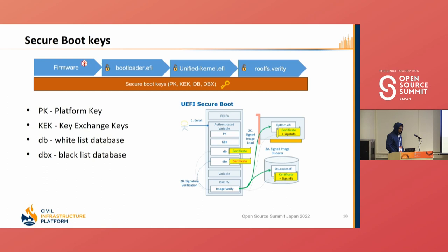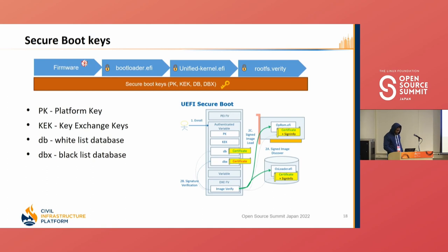In CIP, we use two mechanisms. Using self-generated keys — all keys are self-signed — for demonstration purposes. There is a script in CIP that generates all these keys: PK, KEK, and DB, using OpenSSL commands and EFI tools to prepare these certificates.